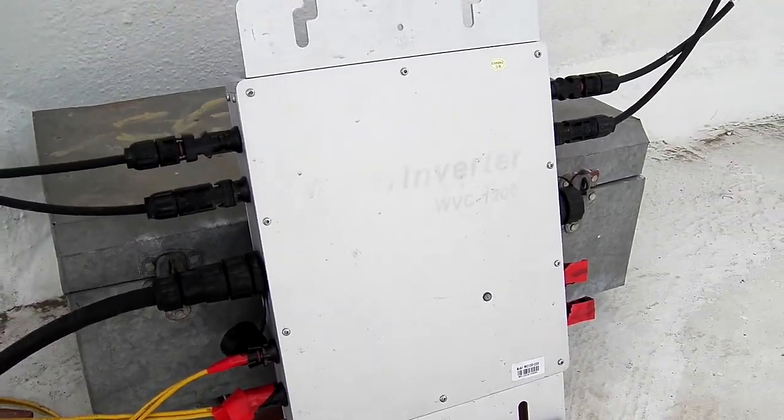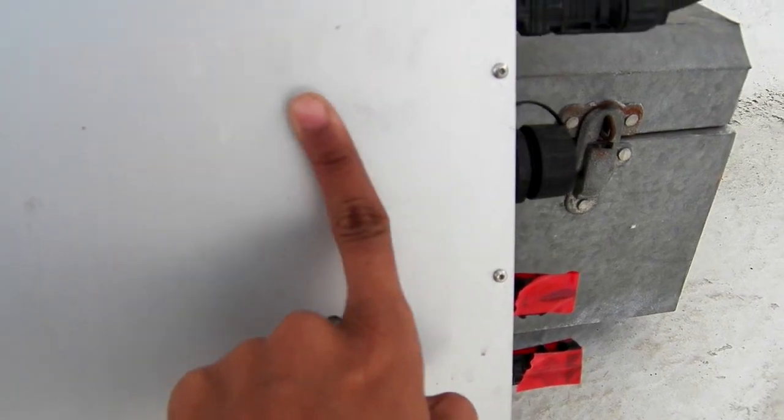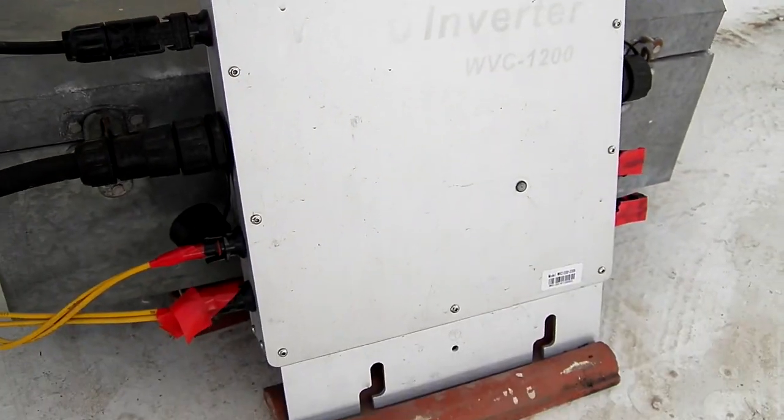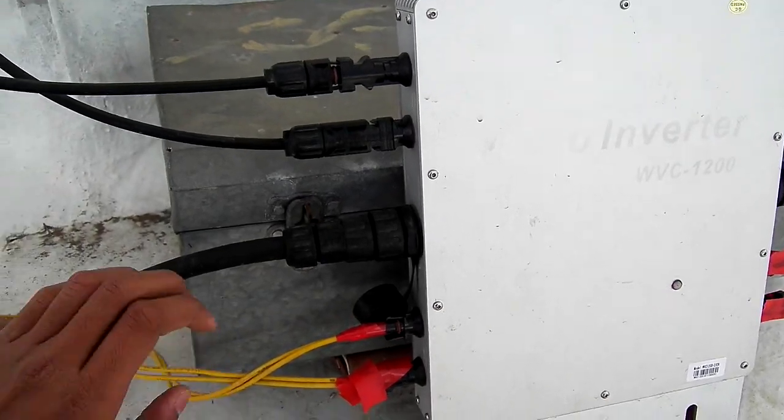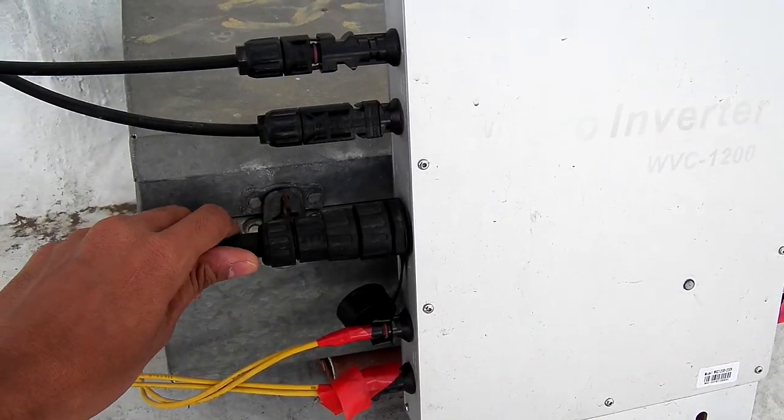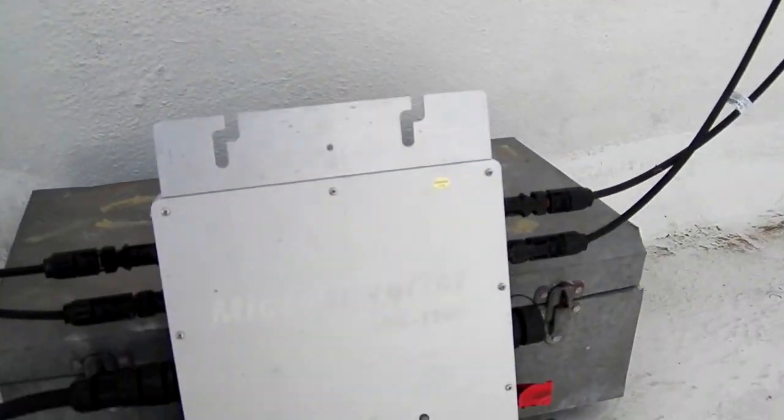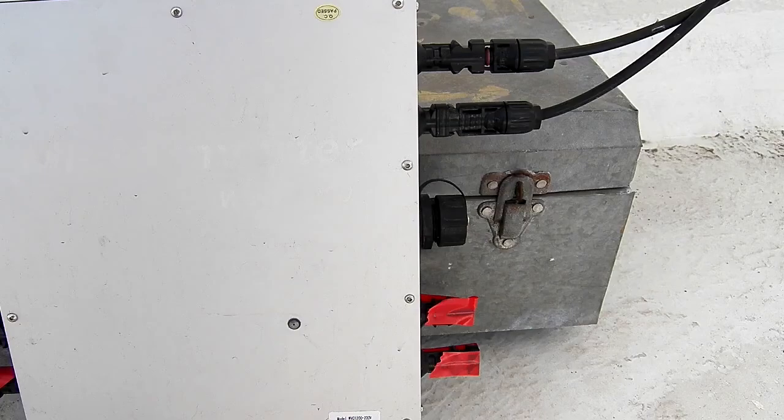It is a micro inverter, WVC 1200, and it has four input solar ports - one, two, three, and four - and one AC output port which can be directly connected to your grid. There is also an extra AC port.